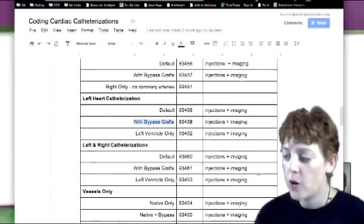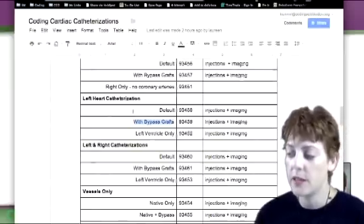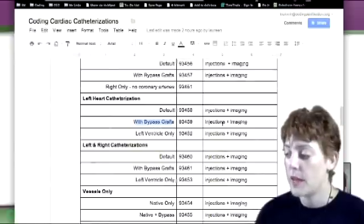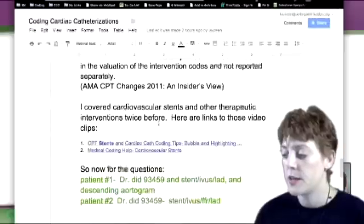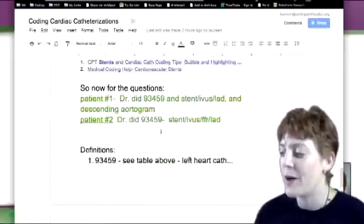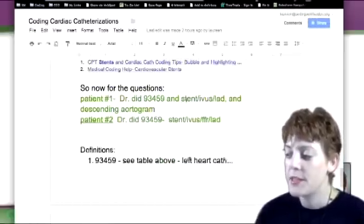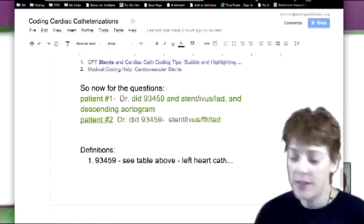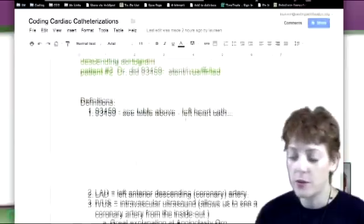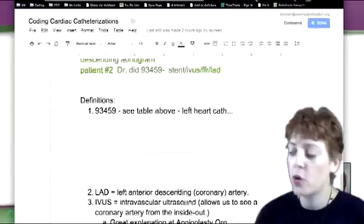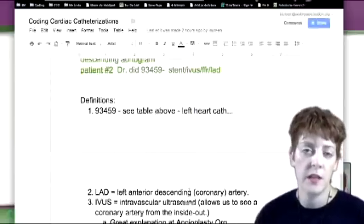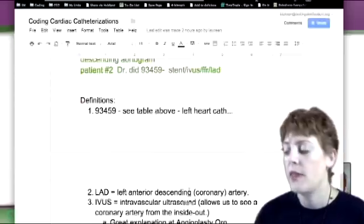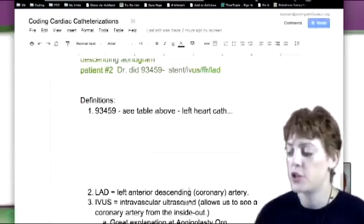So now that one code is telling the story, the catheterization is on the left side. It's with bypass codes. And we don't bill injections or imaging separately because it's bundled. So that takes care of the first thing. And of course, she gave me the code. So that wasn't hard for me to figure out. Then she said stent and IVUS. LAD is actually referring to the vessel. So there's a left anterior descending coronary artery. And you need to figure that out because there are some procedures that are done on non-coronary vessels and then those that are done on coronary. So you need to make that distinction. So the LAD is a coronary artery.